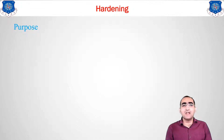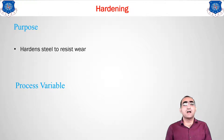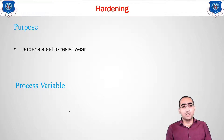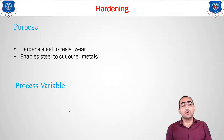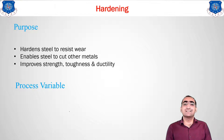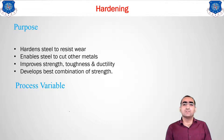The purpose of hardening: first, as the name suggests, to produce harder steel — to resist wear, since wear is the removal of metal that occurs when a component is in motion. Second, it enables steel to cut other metals — high-speed steels used for cutting different materials use the hardening method. Third, it improves strength, toughness, and ductility, developing the best combination of strength properties in the heat-treated steel.